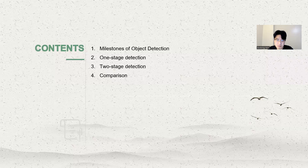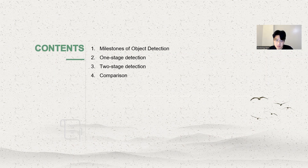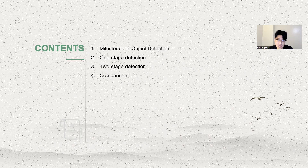I will divide this presentation into four parts. Firstly, I will briefly review the milestones of object detection. In the next three parts, I will explain the two current mainstream methods, namely one-stage and two-stage detection, and their comparison.